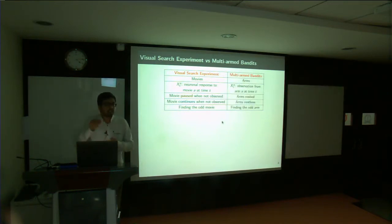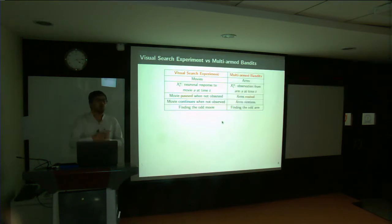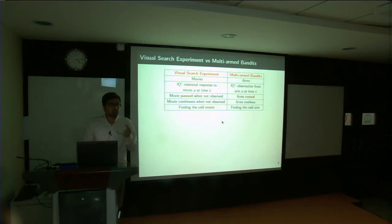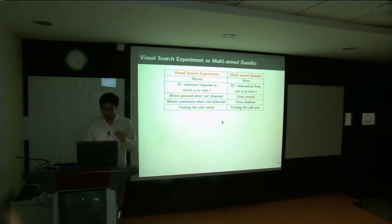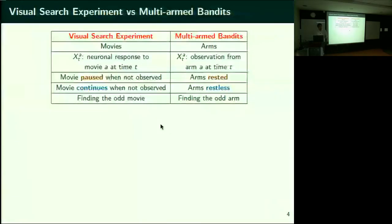You can pull various levers at various time instants. You pulling a lever corresponds to you selecting a movie location to observe. At time t on movie A, you got a certain neuronal response after observing the frame — that is treated as an observation in a multi-arm bandit. It's an observation you get by pulling arm A at time t.